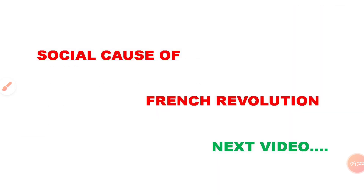We have now covered the main political causes of the French Revolution. Next, we will talk about the social causes. This video will be very long, so I will take the social causes in the next video. History is a story — it will be very fun. Try to read it as a story and you will remember the dates and events much more easily.